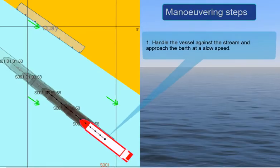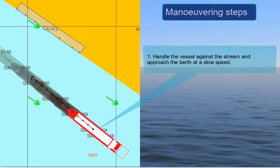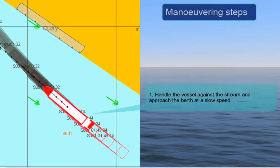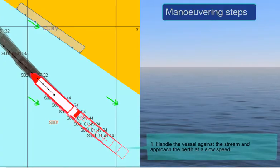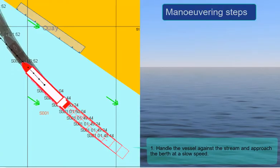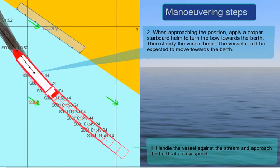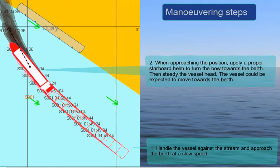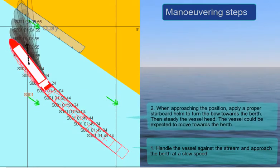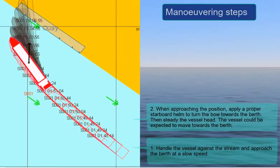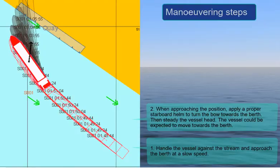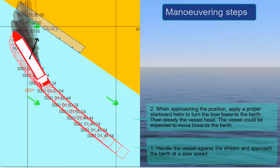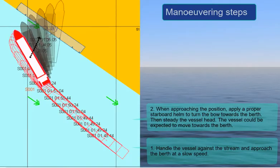Step 1: Handle the vessel against the stream and approach the berth at a slow speed. Step 2: When approaching the position, apply a proper starboard helm to turn the bow towards the berth. Then steady the vessel head. The vessel could be expected to move towards the berth.